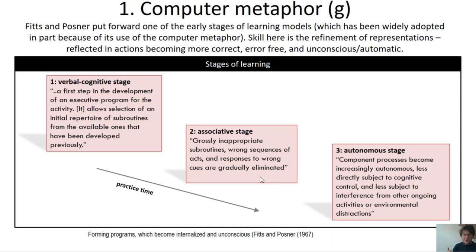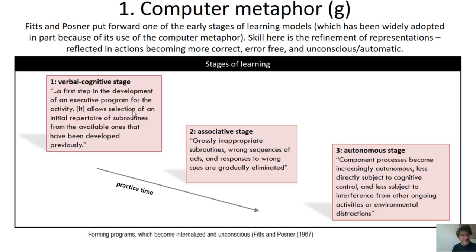Fitts and Posner proposed that just as we go through stages to process information and produce an action, we also go through stages to become skillful. As a beginner, the first stage is the verbal-cognitive stage: the first step is to develop an executive program of the activity — this means we're able to identify the correct task we need to complete, as well as select an initial repertoire of subroutines from those we already have, such as our fundamental movement skills, in order to achieve the identified tasks.